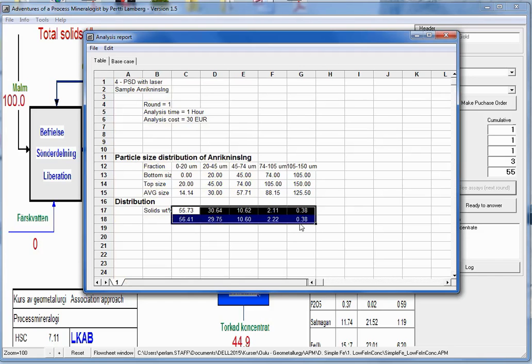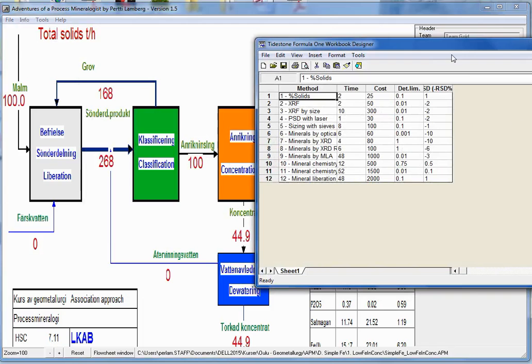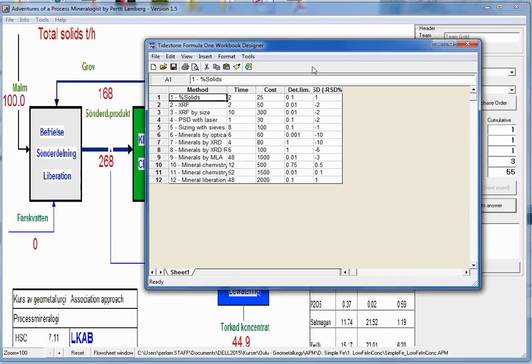There is difference. Whether this is significant. You can look the info and assay methods. And particle size distribution with laser. Detection limit 0.1. And relative standard deviation. This negative means relative. So 2% relative standard deviation between different methods.